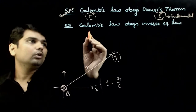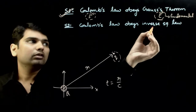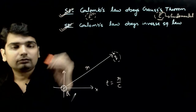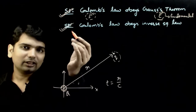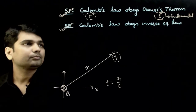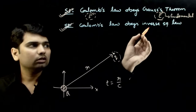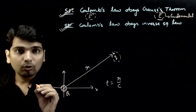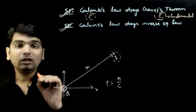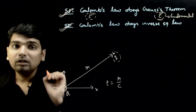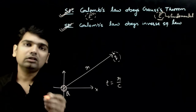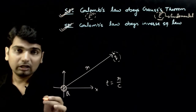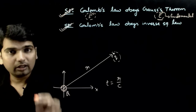Statement 2 says: Coulomb's law obeys the inverse square law — that is also absolutely correct, so Statement 2 is also correct. Now, is Statement 2 explaining Statement 1? Any field in the world that follows the inverse square law will follow Gauss's theorem.